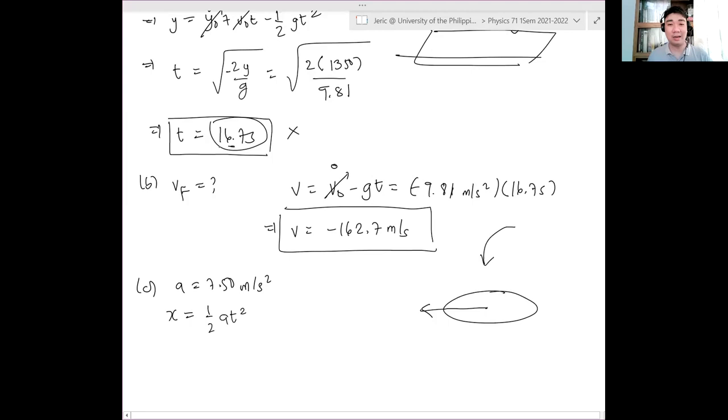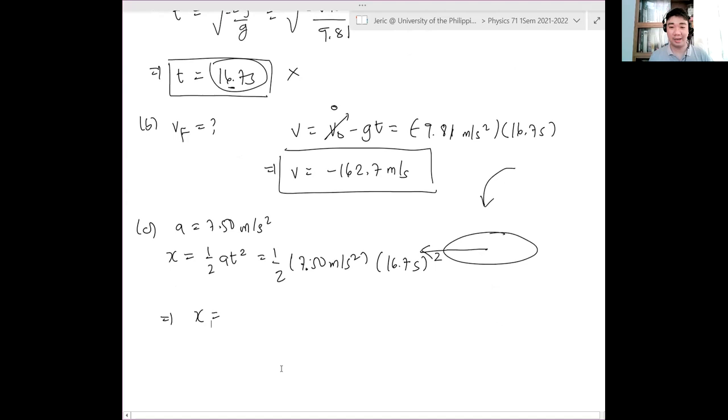So we have one half times 7.5 meters per second squared times 16.7 seconds squared. And therefore, we get something like, what's the answer? This is about 1,045 meters. Oh, she will barely escape! At least in this problem. She will barely escape. One kilometer is the blast site radius, and she traveled about 1,045 meters. But of course, there's some caveats, because it's not necessarily radially outward from the blast site radius that she traveled.